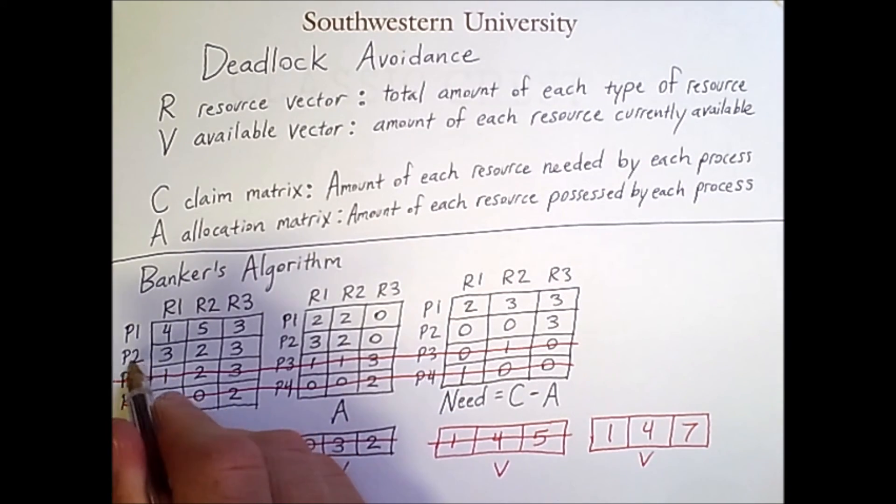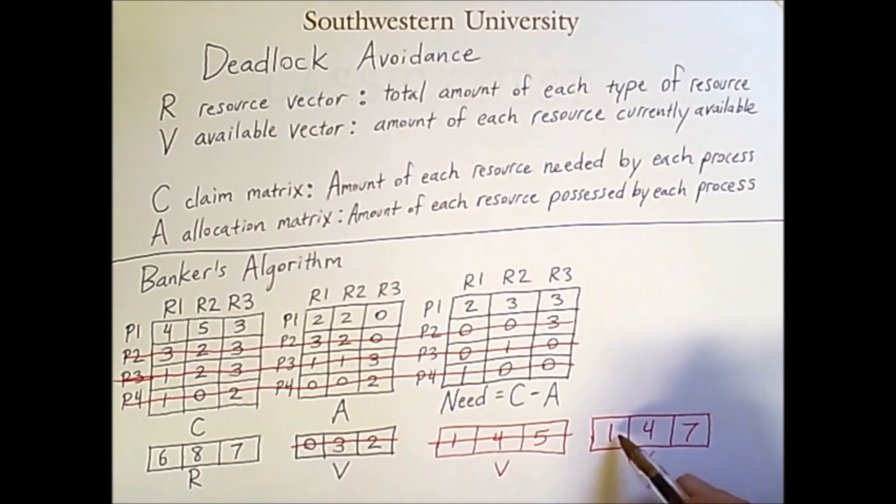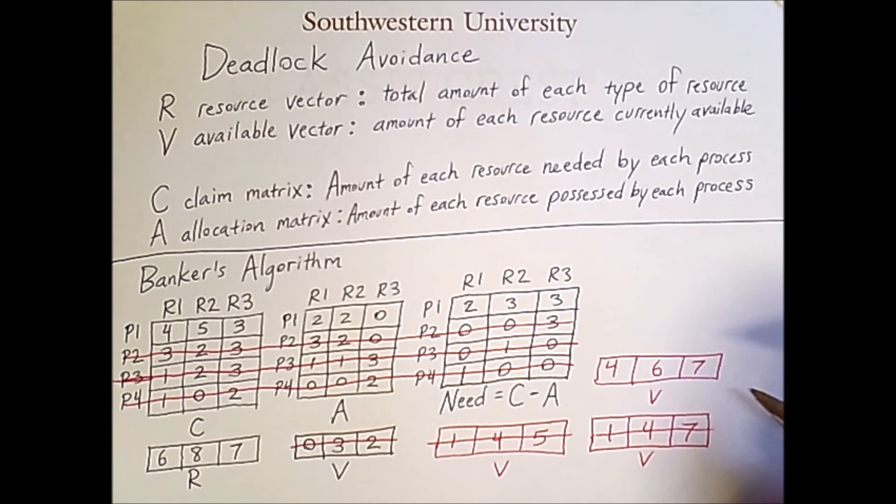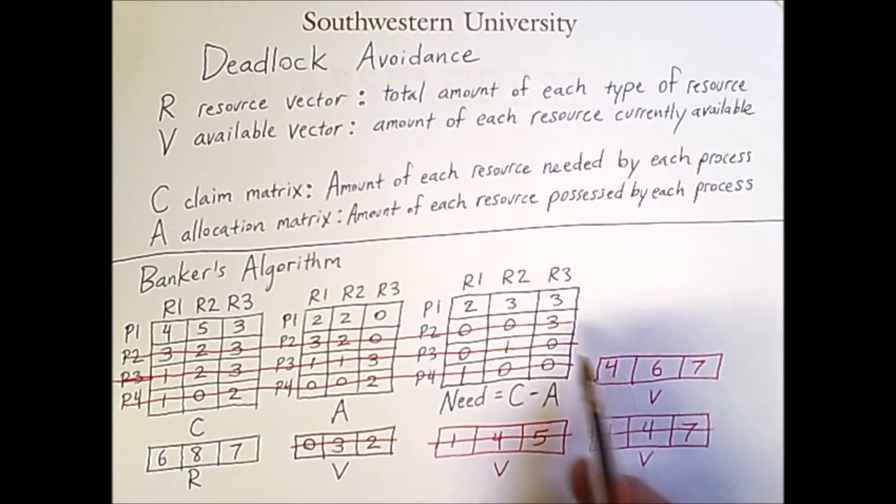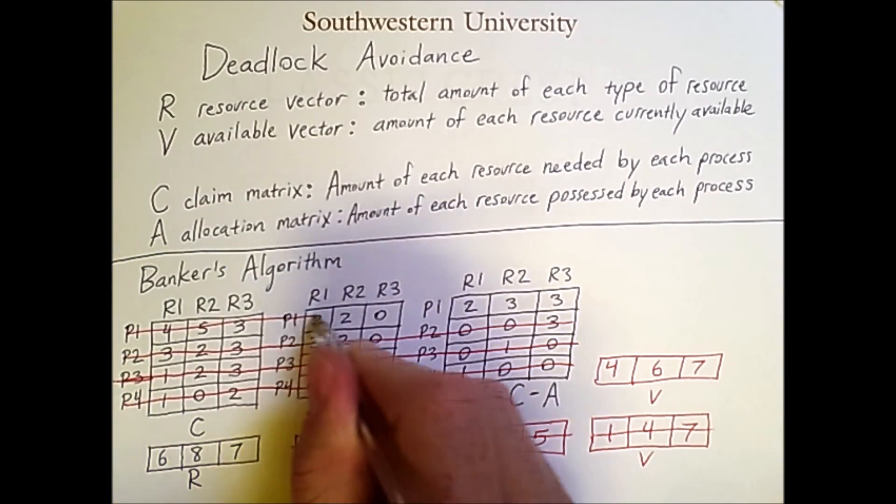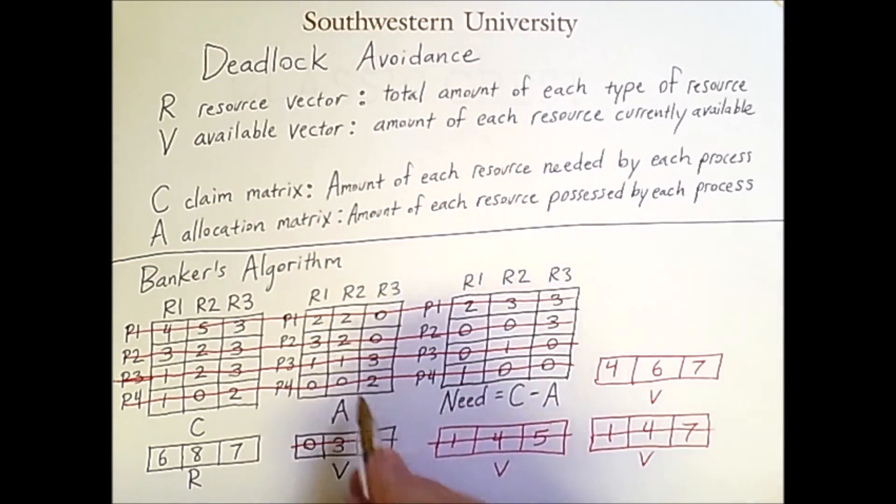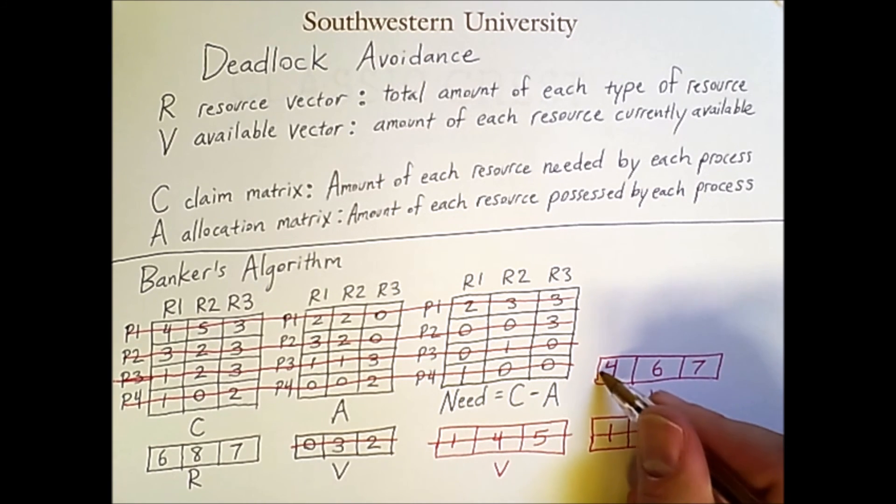So let's run it to completion and reclaim its resources. And now with this available vector, we finally have enough resources to run process 1, because 2 is less than 4, 3 is less than 6, and 3 is less than 7. So we run this to completion. We add back the allocated resources to the available vector and get the following.